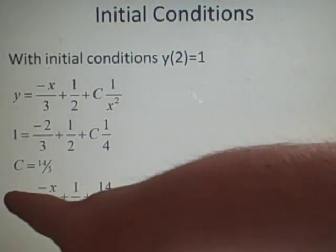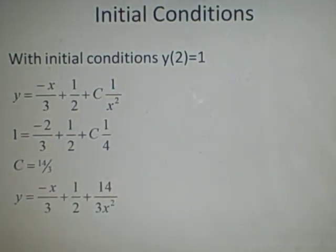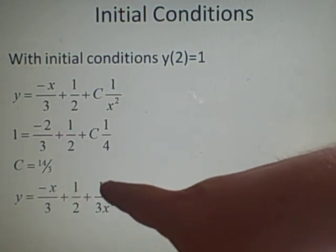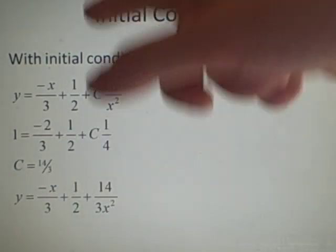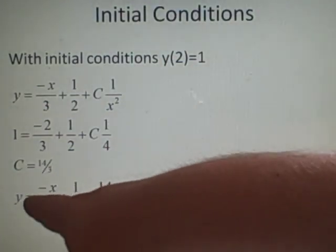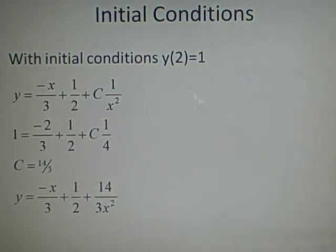Just put that value back in. So, y equals, that shouldn't be there. I'm sure that should be minus, oh yes, that's fine. So, now all we've got is our value for c. So, we just put the value for c in. So, it's y equals minus x over 3 plus 1 half plus 14 over 3x squared. I hope that made sense.